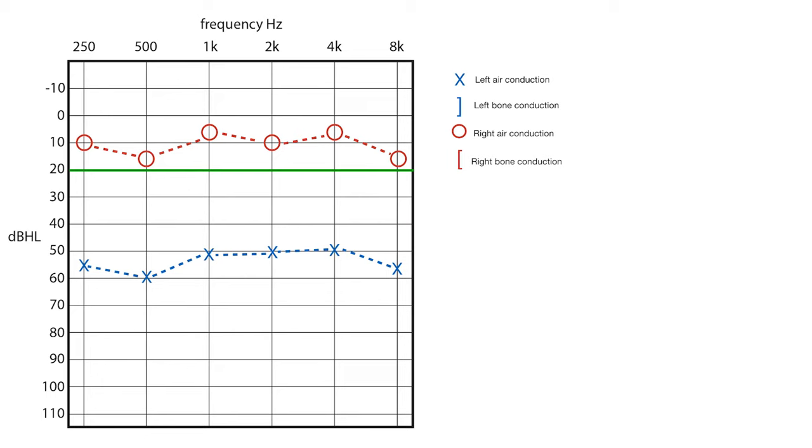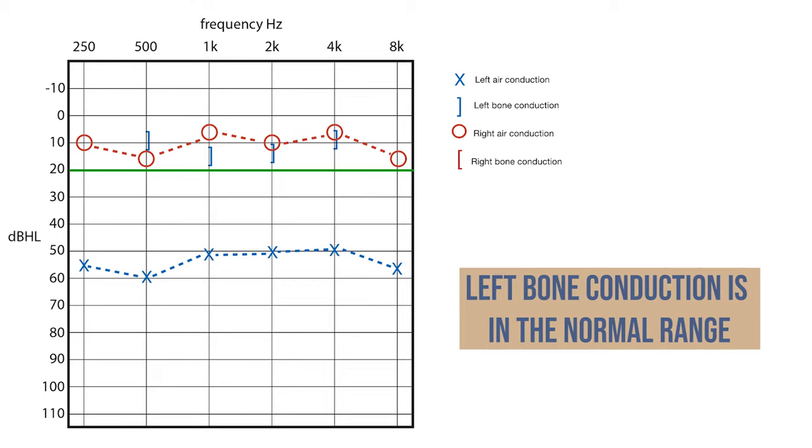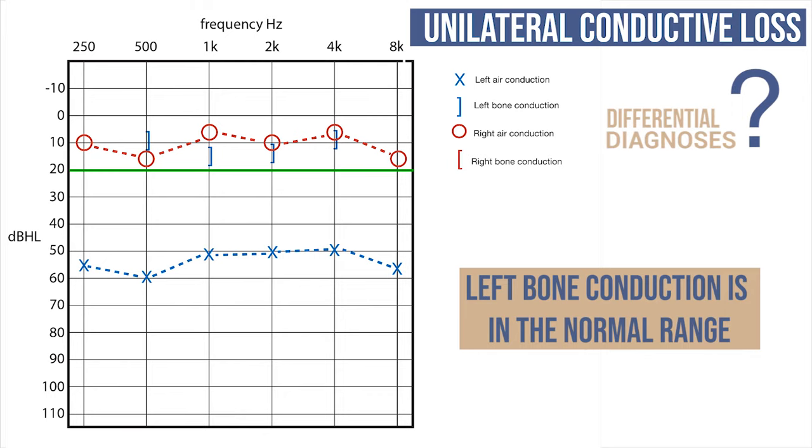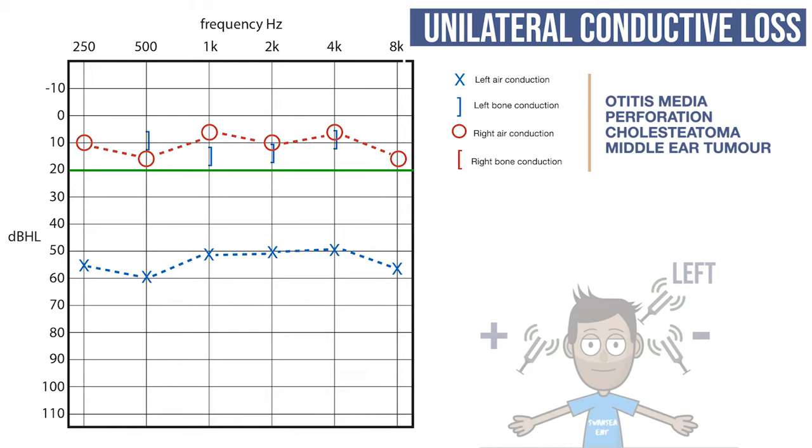In this case, the patient records the following plot points, all of which fall below 20 decibels, indicating normal bone conduction. This demonstrates that the nerve is working appropriately but there is a defect in the ear canal, tympanic membrane or ossicles. Therefore, this patient has conductive hearing loss in their left ear, possibly as a result of otitis media, perforation, cholesteatoma or middle ear tumor. Rinne's would be negative on the left and Weber's would lateralize to the left.